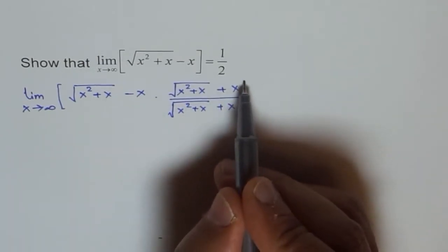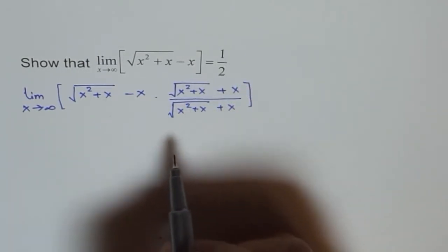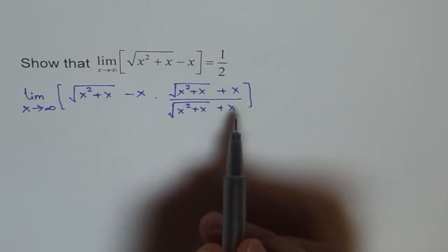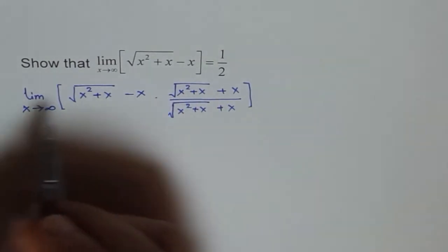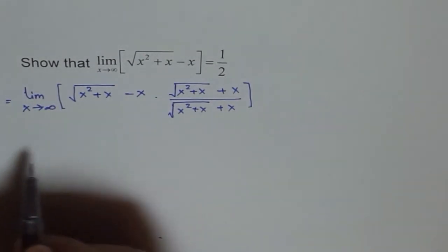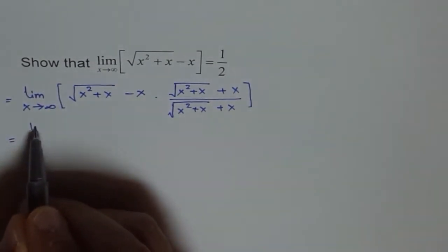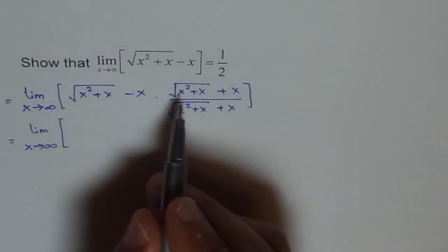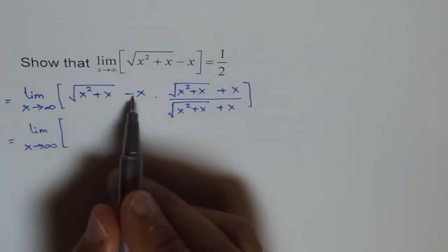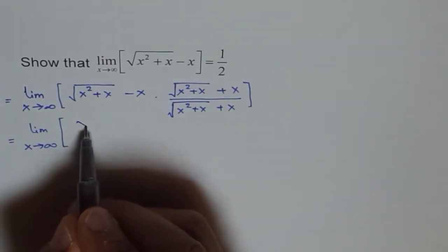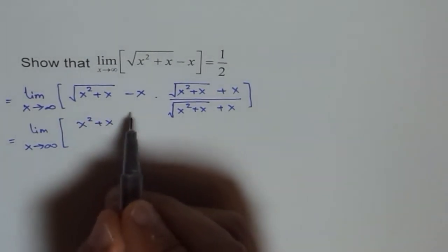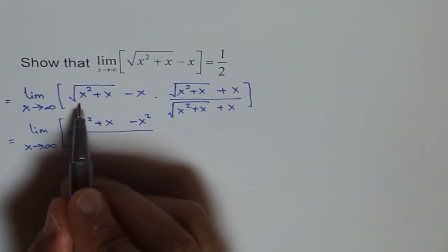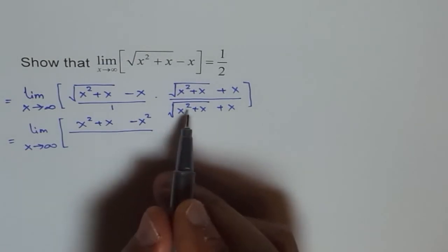We are rationalizing the numerator. This is like a minus p times a plus p, and when you expand it you get a squared minus p squared. So this equals the limit as x approaches infinity, and we get the square of the first term minus the square of the second term — that is x squared plus x minus x squared — over the conjugate expression.